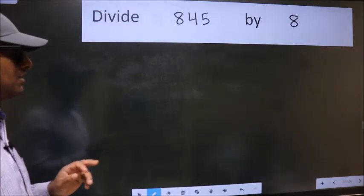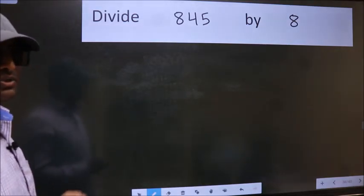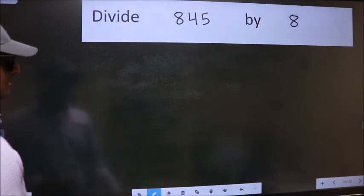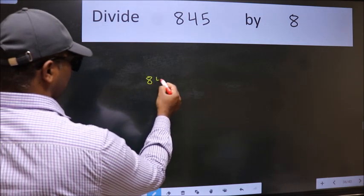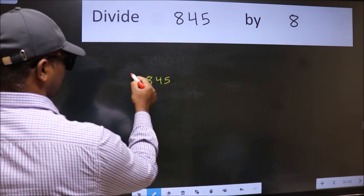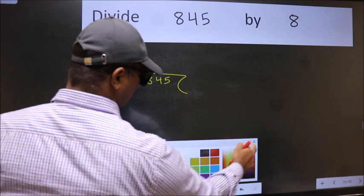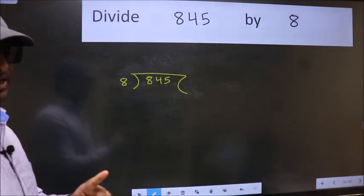Divide 845 by 8. To do this division, we should frame it in this way. 845 here, 8 here. This is your step 1.